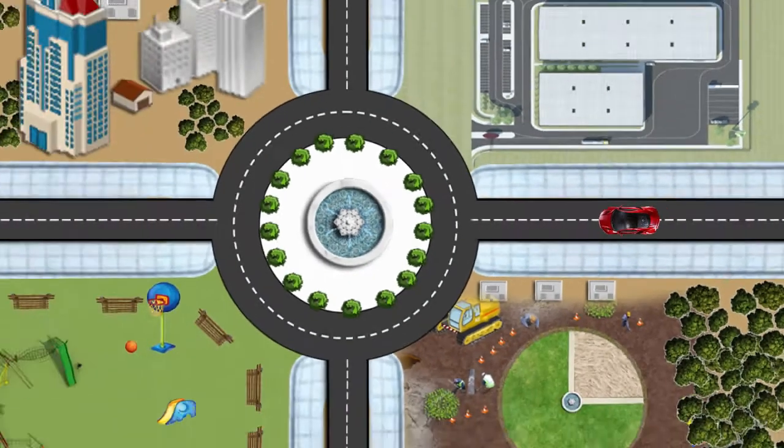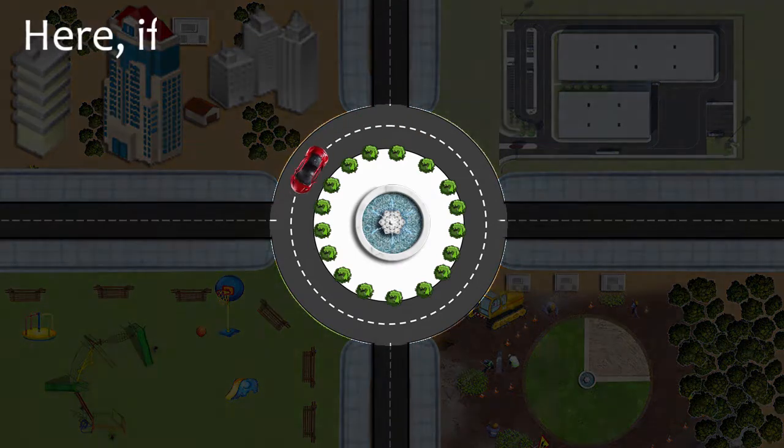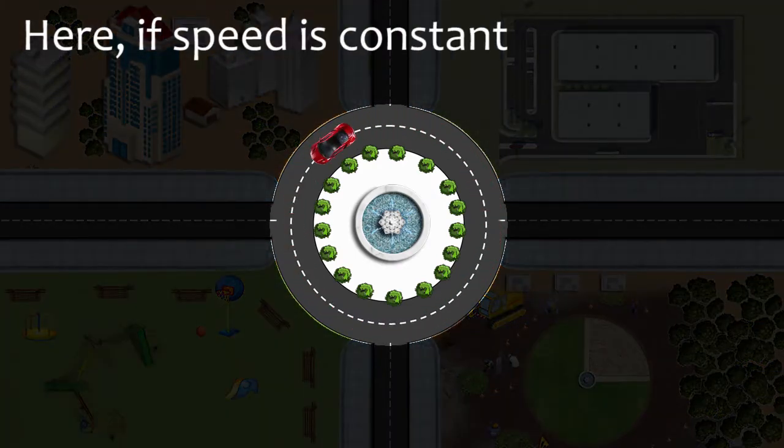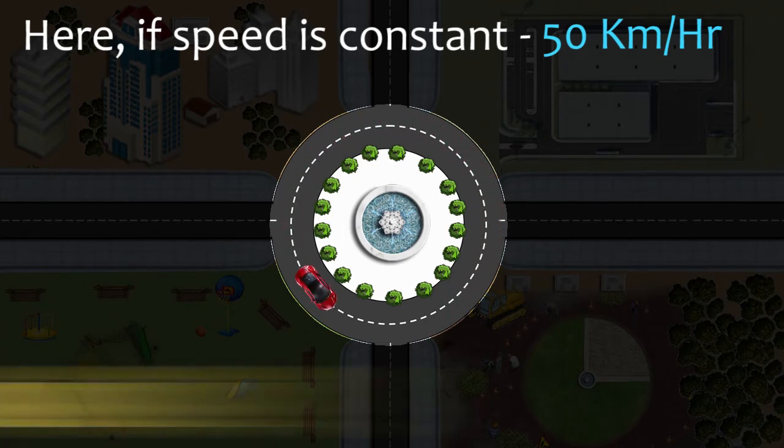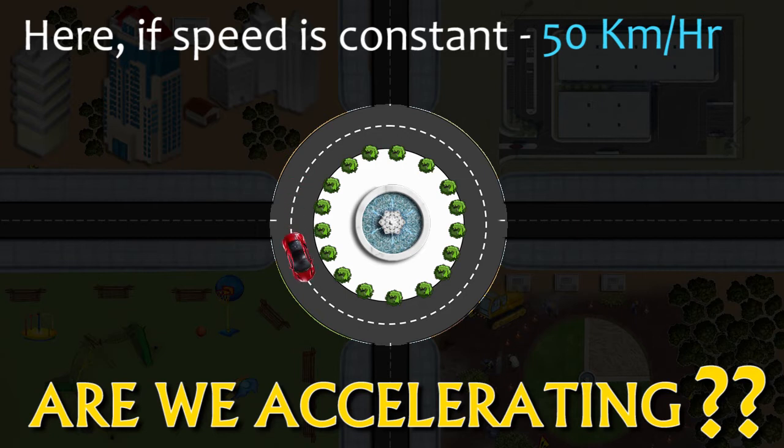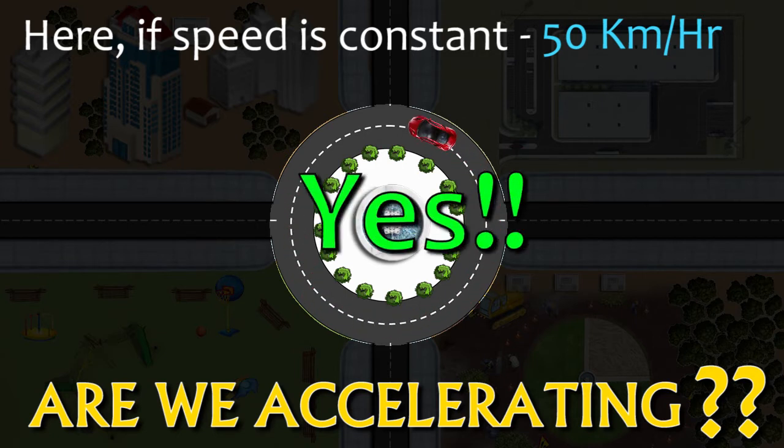Let's assume we're driving a car along a circular track with a constant speed. Say the speed is 50 kilometers per hour. Here's a simple question for you. Are we accelerating? If you said no, well, then that's not entirely right.